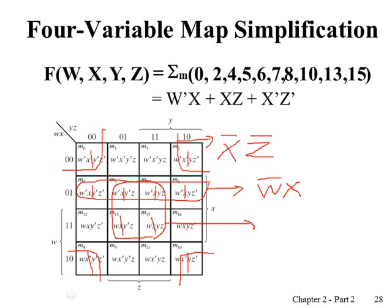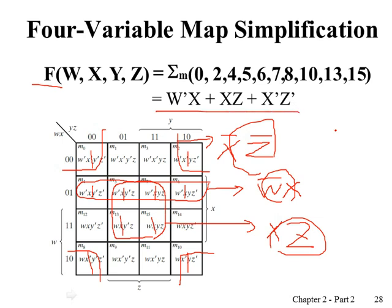For the four cells in the center: between rows, W changes but X does not change — X has value one, so we put X in true form. Between columns, Y changes but Z does not change — Z is in true form. So the expression for this group is XZ. The simplified solution for function F is the OR of these three terms: X̄Z̄ + W̄X + XZ.